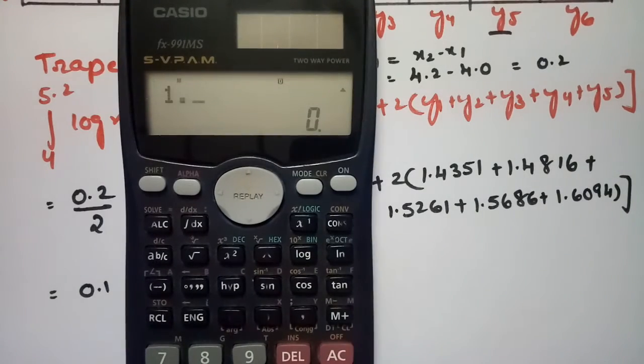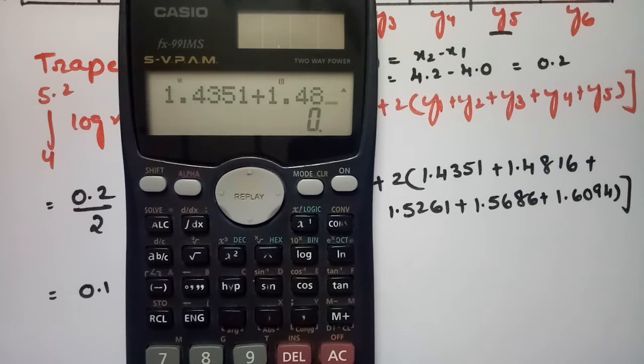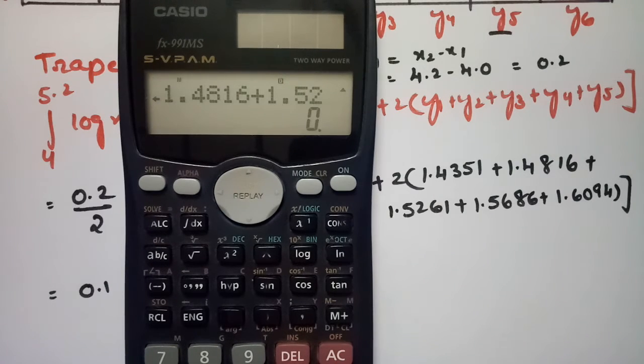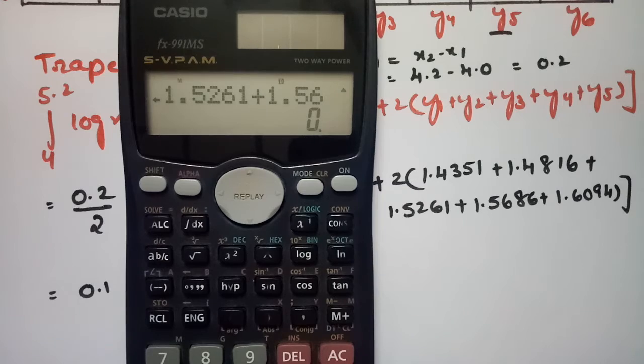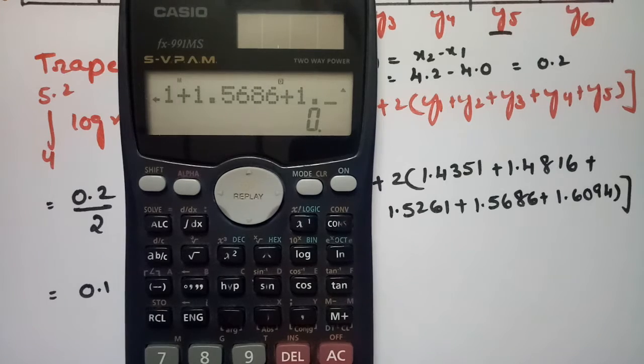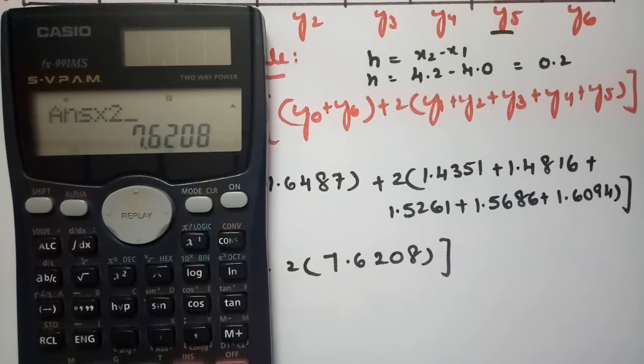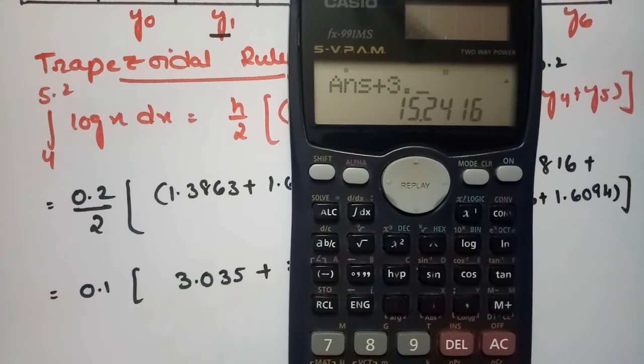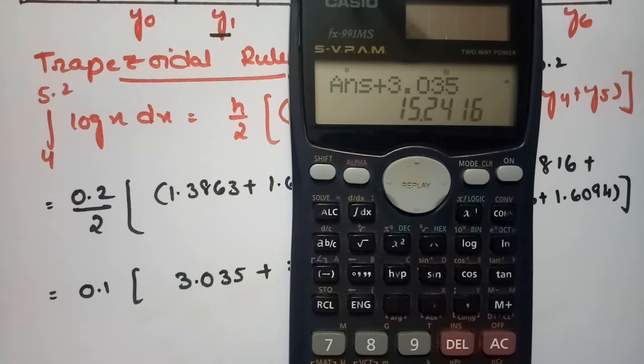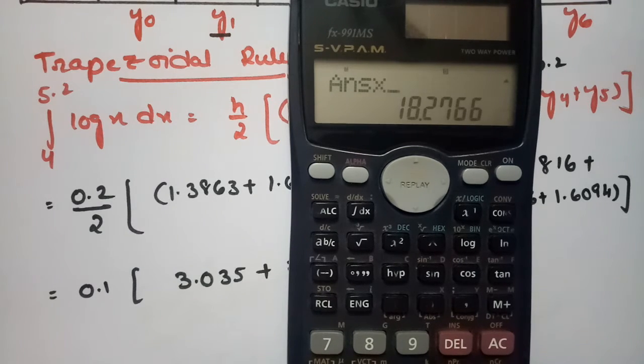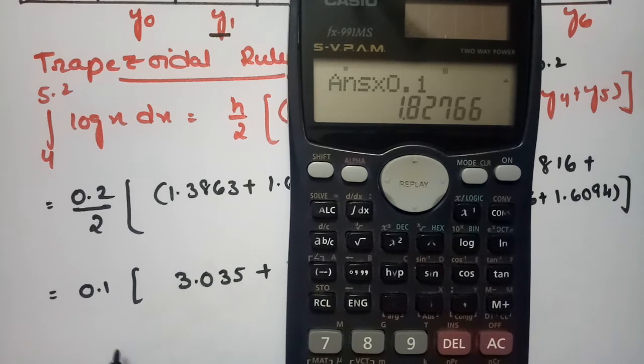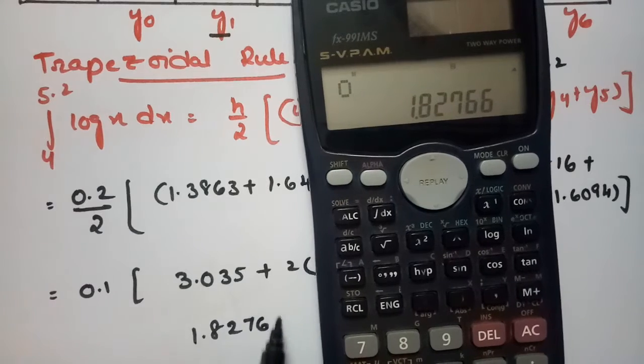So if I add all these values that is 1.4351 plus 1.4816 plus 1.5261 plus 1.5686 plus 1.6094, this is 7.6208. So we have to multiply with 2 and again we have to add with 3.035 and again we have to multiply with 0.1. So we got the value as 1.82766.